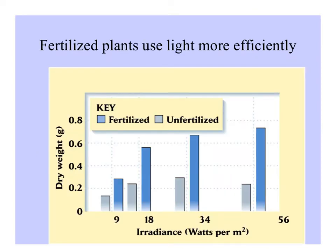Resources for plants are nutrients and light, and here you can see there's an interaction. Fertilized plants with ample nutrients can use light more efficiently. On the y-axis, the dry weight — an indicator of the amount of growth — and you can see at the higher light levels there's much more growth in fertilized plants.